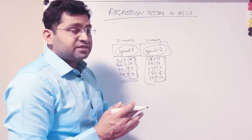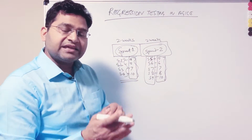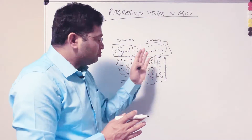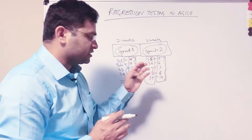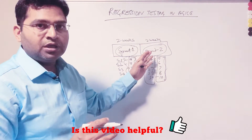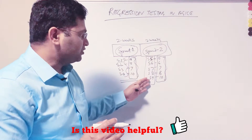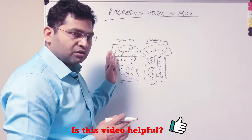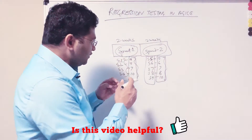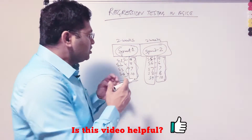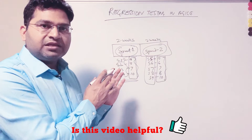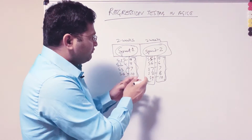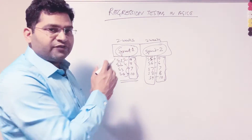That is what regression testing is — ensuring that any existing functionality of the application that was already working prior to new implementation, whether it's the addition of new functionality from user stories or a defect that was raised in Sprint 1 and got fixed, hasn't broken. Any updates that happen require you to re-execute existing functionality or a subset of it to ensure it still works.